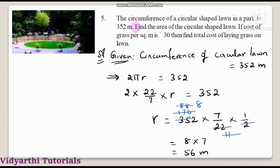Question number 5: the circumference of a circular shaped lawn in a park is 352 meters. Find the area of the circular shaped lawn. If the cost of grass per square meter is rupees 30, then find the total cost of laying grass on the lawn. The circumference of this circular lawn is given as 352 meters.